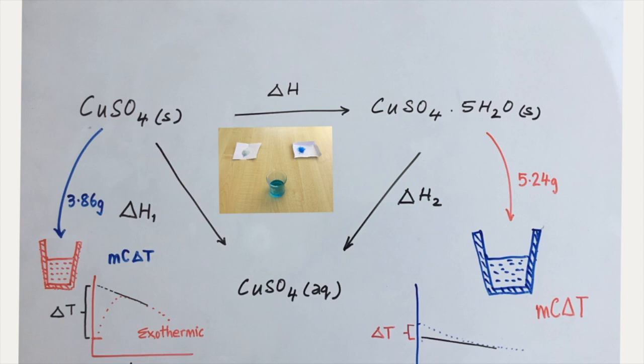So it's possible to use mass by specific heat capacity of water by delta T, the change in temperature, to determine delta H₁, the enthalpy change associated with anhydrous copper sulfate going into aqueous solution.